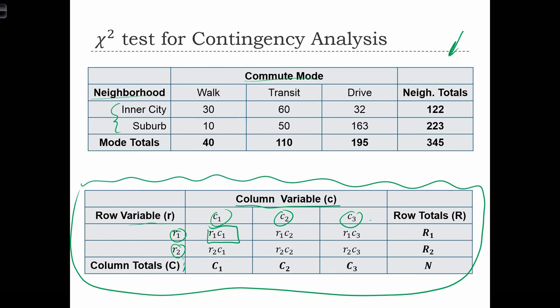Inside, we have the number of people who are simultaneously in row 1 and column 1 - or row 1, inner city, and walkers. So in our case, we had 30 individuals who were living in the inner city that walked. We had 60 that lived in the inner city that took transit. And over here, we had 163 suburbanites who drove.